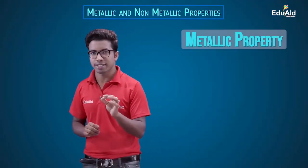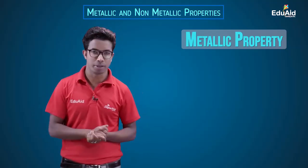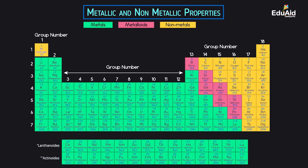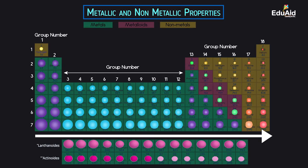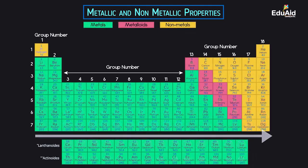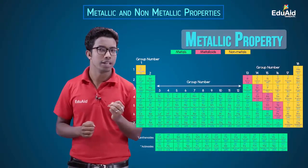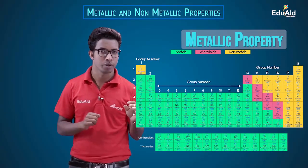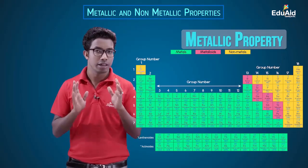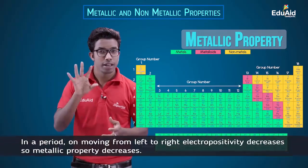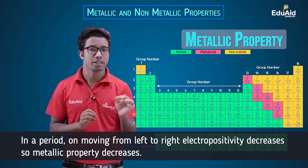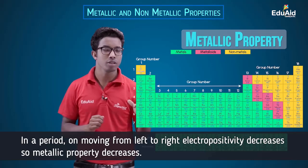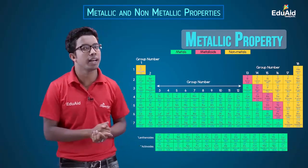Now let's see how metallic property changes in the modern periodic table. In the periods, on moving from left to right, the size of the atoms decreases because there is an increase in effective nuclear charge. So the outermost electrons will be more tightly bound to the nucleus, and the ability of an atom to lose electrons will decrease. That means the electropositivity decreases across a period, and so the metallic character also decreases from left to right in a period.